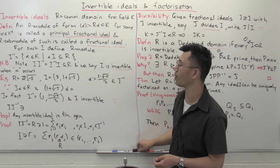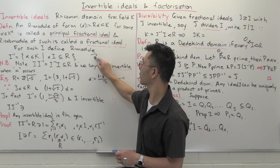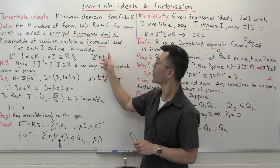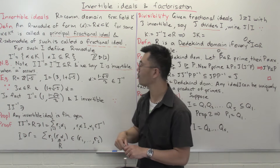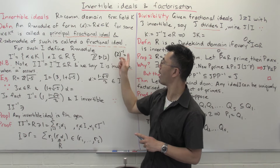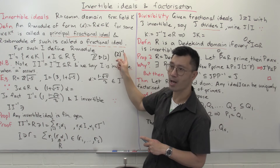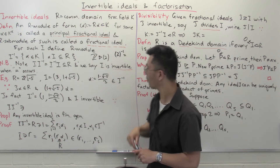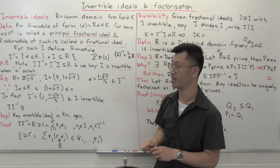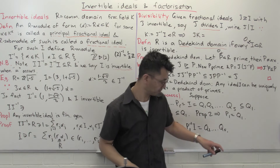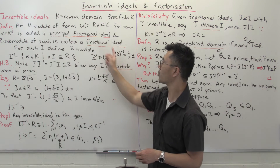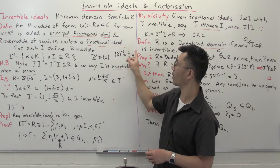Let's look at a simple example. Inside Z, if you look at the ideal (2) — this is a principal ideal, and also a principal fractional ideal — and if you want to look at its inverse, that's all rational numbers such that when you multiply by any even number you get an integer. And of course they're just all the integer multiples of one-half. So it's the principal fractional ideal generated by one-half. That's an example of an I-inverse.